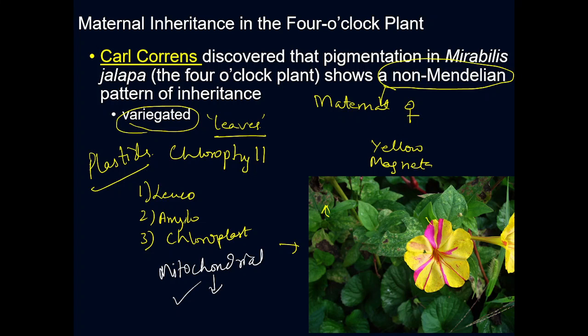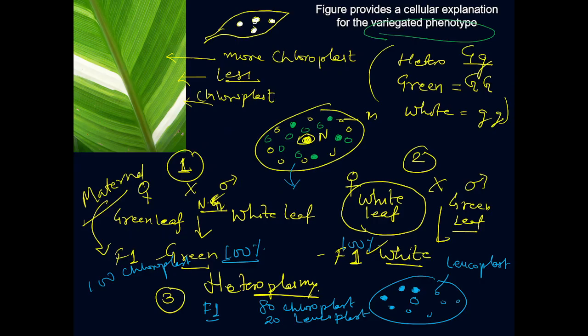I also explained who discovered maternal inheritance — Karl Correns — what variegated leaves are, and how the green, white, or mixed green-white inheritance pattern works. I would like to end here and thank you for listening. I will be coming with maternal effect and mitochondrial inheritance pattern — very important topics — so please stay tuned. If you like this lecture, please click the like button and subscribe.